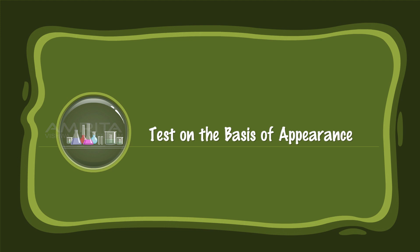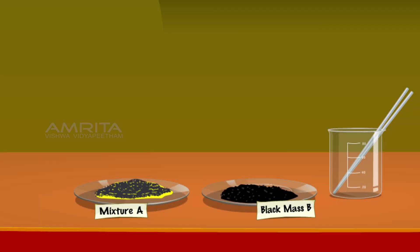Test on the basis of appearance. Take a small quantity of mixture A and black mass B in two different watch glasses. Mix the mixture A in the watch glass using a glass rod. You will see yellow powder in which some iron fillings are visible.